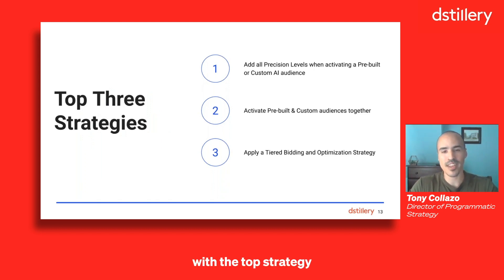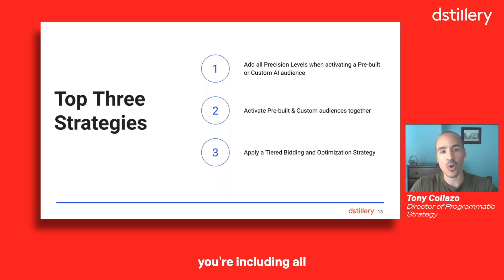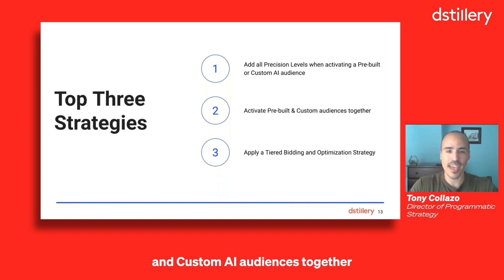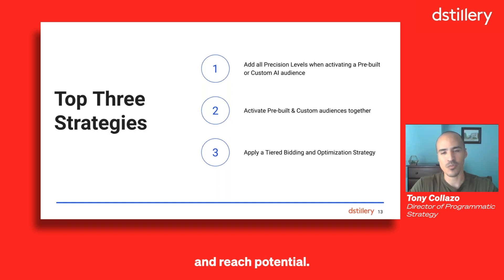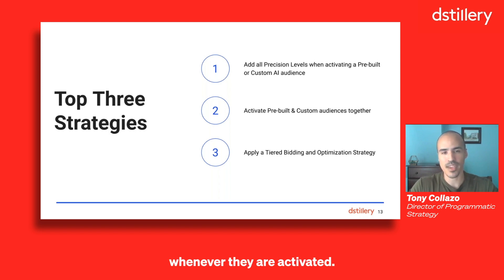Starting with the top strategy: whenever you're activating one of our pre-built or custom AI audiences, you really want to make sure you're including all available precision levels. Most importantly, you want to take advantage of activating both pre-built and custom AI audiences together to really maximize your performance and reach potential. Number three is applying a tiered bidding and optimization strategy against our audiences whenever they are activated.